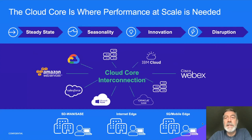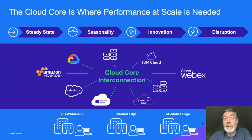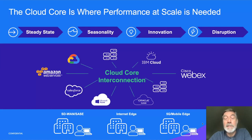The cloud core is essentially the idea of using private connectivity to connect your cloud assets together in steady state to increase performance. Through a network as a service offering with the agility it provides, you can accommodate things like seasonality — turn up or turn down bandwidth as needed based on seasonal demand. And to further enable innovation, you can reach out to new locations, new clouds, adopt new applications in the cloud with just the click of a button. If something like a merger and acquisition came up, you can connect the networks together rather painlessly through a fabric like Packet Fabric.